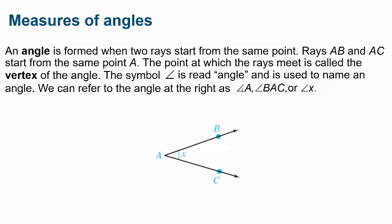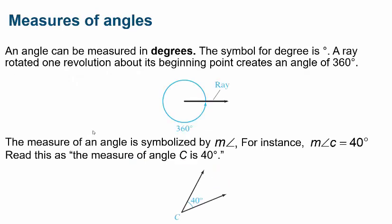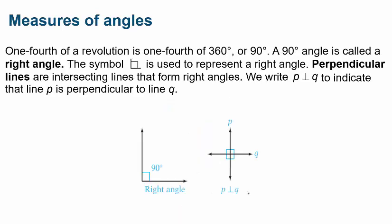Whenever you see this symbol, think 'angle.' An angle can be measured in degrees — you might hear something like a 25-degree angle or a 40-degree angle. The symbol for degree is this little degree sign. A ray rotated one full revolution about its starting point forms a 360-degree angle — one complete revolution. The measure of an angle is symbolized with the letter M followed by the angle sign. For example, the measure of angle C here is 40 degrees.